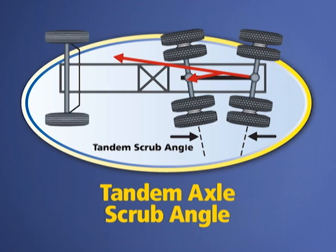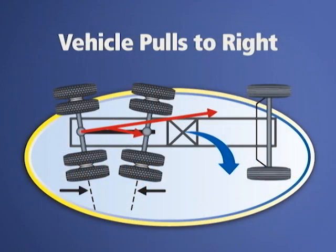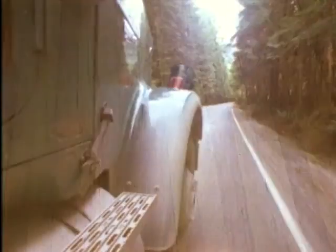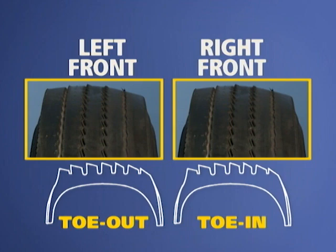On a tractor with tandem drive axles, the two axles should be parallel to one another. Any deviation from this parallel position will create a scrub angle. The Technology and Maintenance Council standards recommend this angle be as close to zero as possible. For example, if the ends of the drive axles on the right side of the vehicle are one half inch closer together than the axle ends on the left side, this will cause the vehicle to pull or drift to the right. Think of this example as similar to rolling a cone along the ground — it will roll in the direction of the smaller end. The driver must counter steer to the left to maintain the vehicle's direction of travel. The result is that the right front tire will exhibit toe in wear, and the left front tire will exhibit toe out wear.